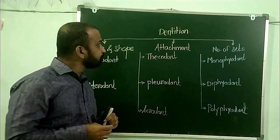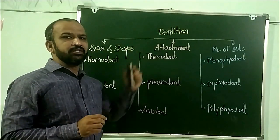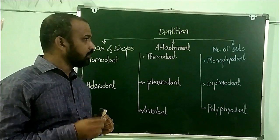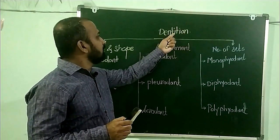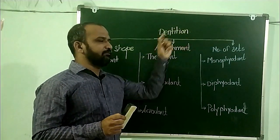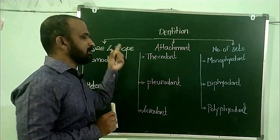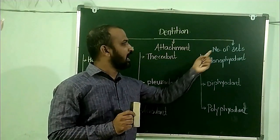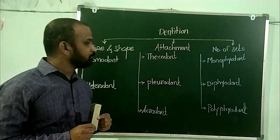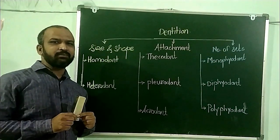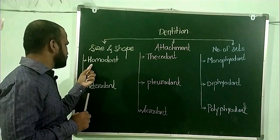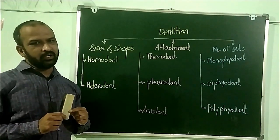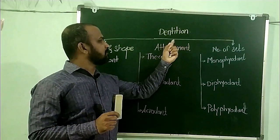Let me revise once again. The dentition is defined as the arrangement of teeth on the upper and lower jaw. Three bases are used for classification of dentition: size and shape of the teeth, attachment of the teeth, and the number of sets. On the basis of size and shape, dentition is classified into two types: Homodont dentition and Heterodont dentition.